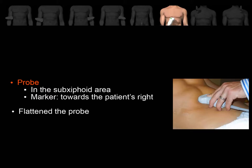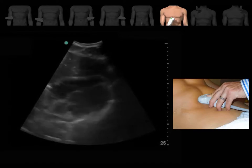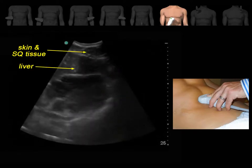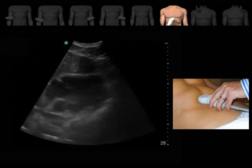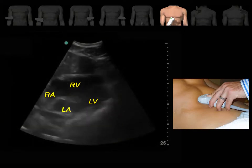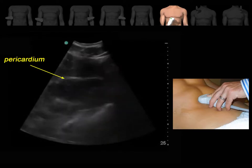The sub-xiphoid view. Place the probe in the sub-xiphoid region with the probe marker towards the patient's right, directing the probe towards the patient's head. The liver is used as an acoustic window in this view. Hold the probe from the top so you can decrease the angle between the probe and the skin. Starting from the near field, the structures you should see are the skin and subcutaneous tissue, the liver, and the heart. The heart chamber close to the liver is the right ventricle, followed by the left ventricle, right atrium, and left atrium. Normal pericardium consists of a single hyperechoic white line surrounding the heart.